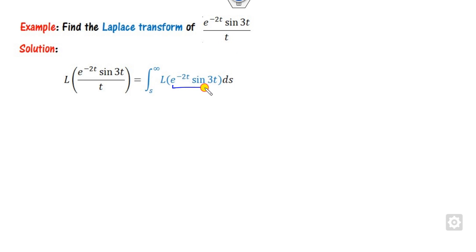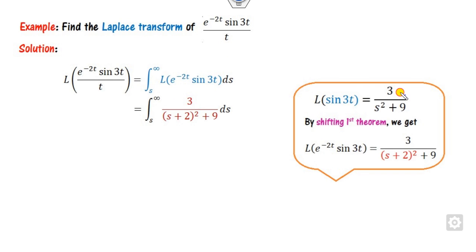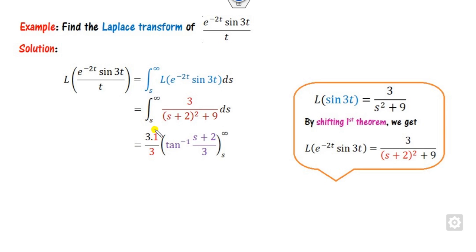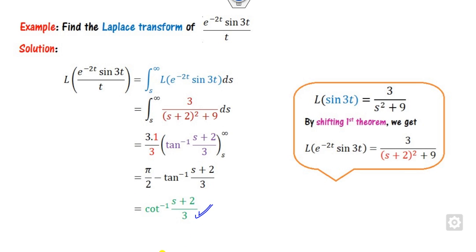For the next question with e^(−2t)·sin(3t) divided by t, since there is an exponential part, use the first shifting theorem for easy calculation. The Laplace of sin(3t) is 3/(s²+9). By the first shifting theorem, replace s with s−a where a = −2, giving s+2. Then integrate this expression from s to infinity. Taking 3 outside, you get 1/a · tan⁻¹((s+2)/3). Substituting infinity gives π/2, so the answer is cot⁻¹((s+2)/3).